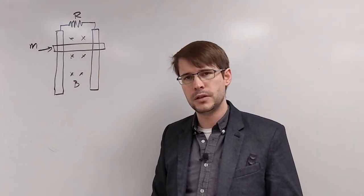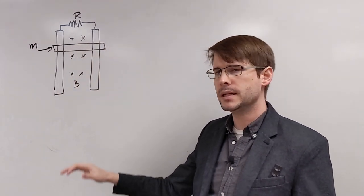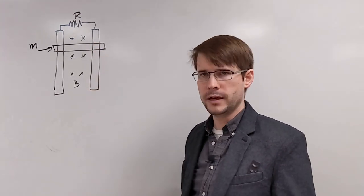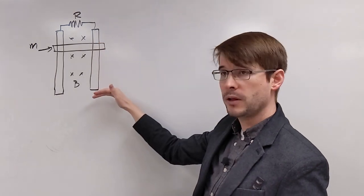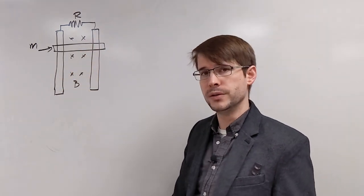All right, so another example with motion EMF, but in this case, we've got a bar that's falling. So this is a vertically oriented thing. The bar is here, it's falling down, but it remains in contact with these other two bars the whole time as it slides down.